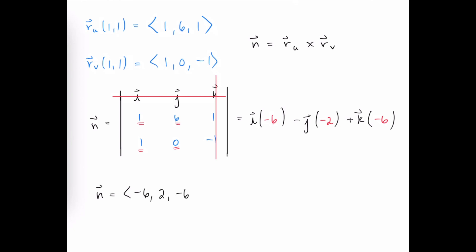Since we only need the direction for perpendicularity, we can use smaller numbers. All three components share a common factor of 2, so we factor it out to get the simplified normal vector ⟨−3, 1, −3⟩, which is also perpendicular to the plane.